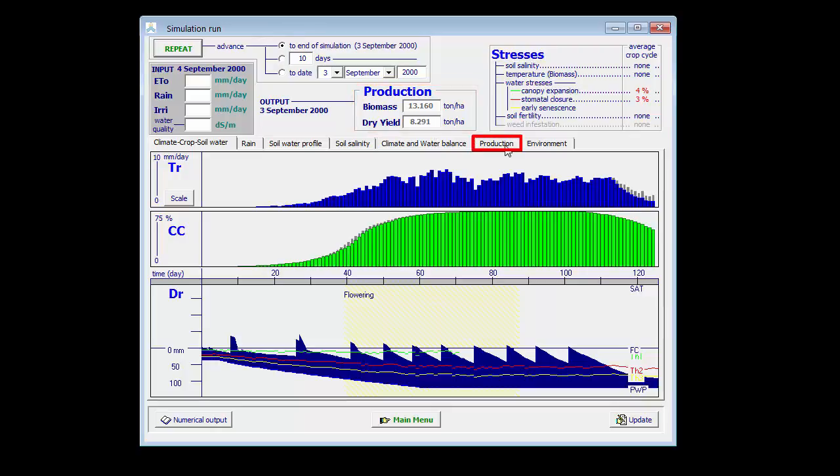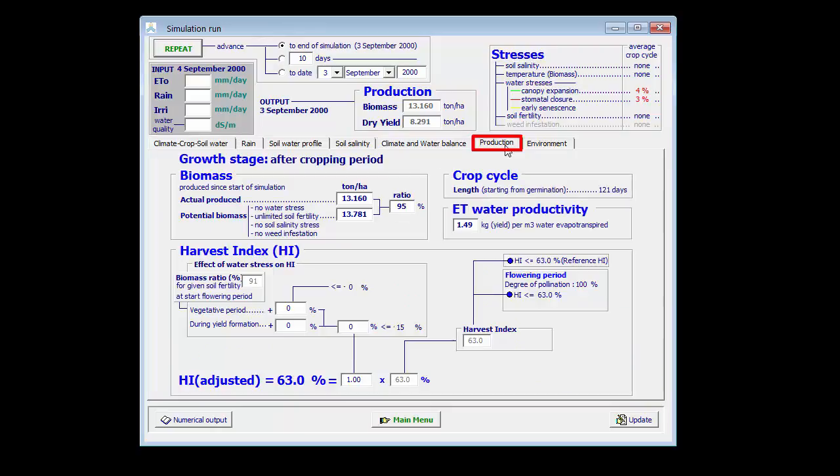In the production tab sheet of the simulation run, I find information about the harvest index, but also about the ET water productivity, which is displayed here. It corresponds for this simulation with 1.49 kg dry yield per cubic meter of water lost by evapotranspiration.